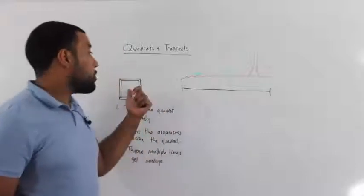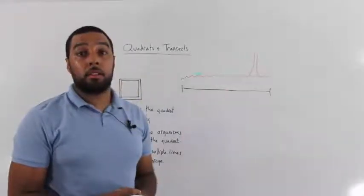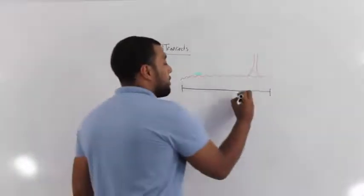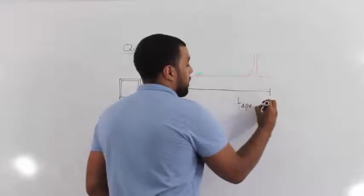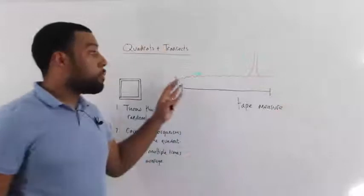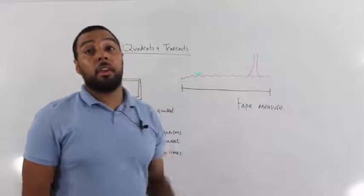Now the use of quadrats become important when we look at a transect. In a transect, all we will do is use a tape measure and we would measure from one end of some land to the other end.